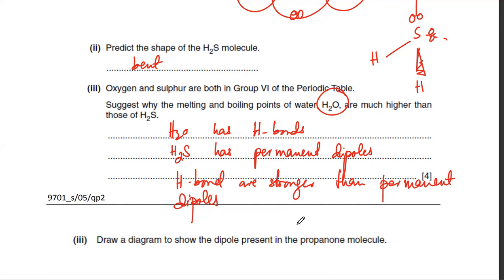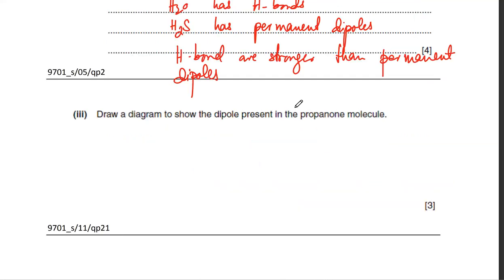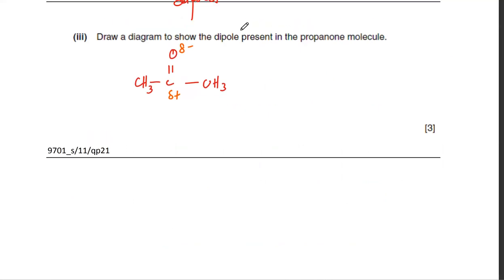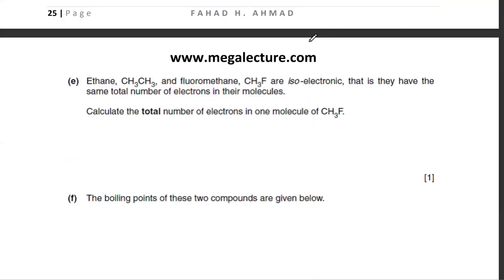Draw the diagram to show the dipole in propanone. The C–H bonds have little dipole, but the C=O bond is highly polar — oxygen is negative (δ−) and carbon is positive (δ+). That's the main permanent dipole. To show permanent dipole–dipole interaction, draw two propanone molecules with δ+ on carbon attracted to δ− on oxygen.